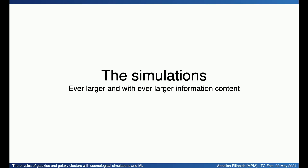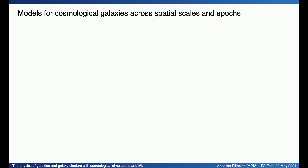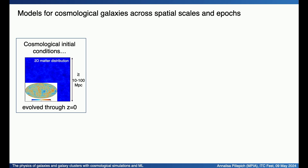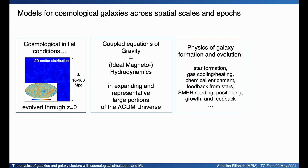It is now possible to apply machine learning to simulations, because current cosmological simulations of galaxies are getting ever larger, with more information content, and more realistic. We are talking about models for cosmological galaxies across spatial scales and epochs, where in practice we start with cosmological initial conditions supported by observations at the highest redshift from the cosmic microwave background. The assumed matter content — dark matter and gas — are evolved by solving the coupled equations of gravity and hydrodynamics, in some cases magneto-hydrodynamics, in expanding and representative portions of the universe in a lambda-CDM cosmology. These equations must be coupled with other equations that represent the physics of galaxy formation and evolution.